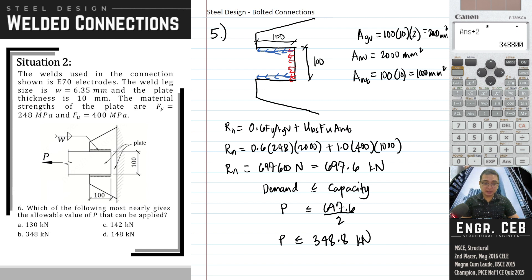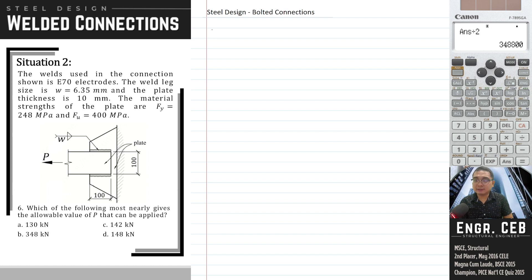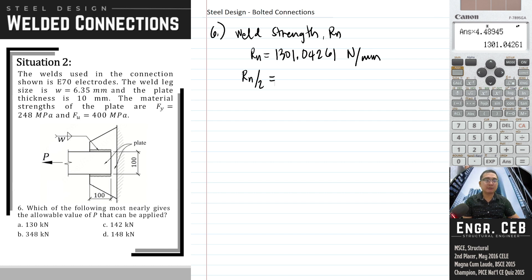Next, which of the following most nearly gives the allowable value of P that can be applied? We need to tabulate. But of course, we need to solve for the weld. We haven't computed the allowable value of P based on weld strength. So the weld strength nominal is 1,301.04261 Newtons per millimeter. But we also have to check the base metal. So let's compute the allowable. The question asks for allowable, so divide by 2 because the factor of safety for welds is 2. So this is 650.521305 Newtons per millimeter.